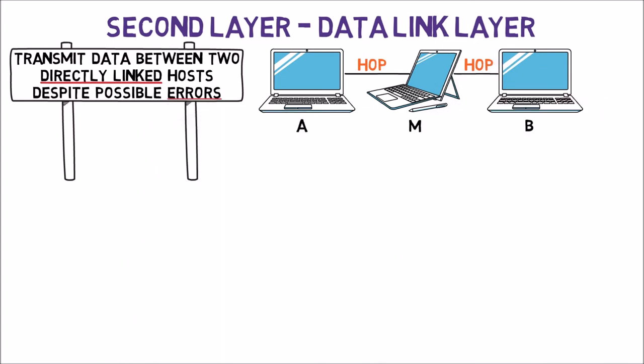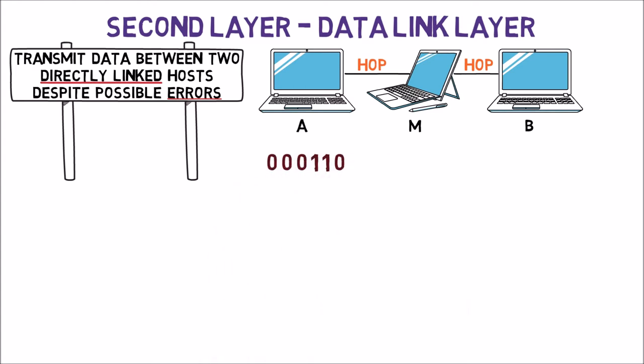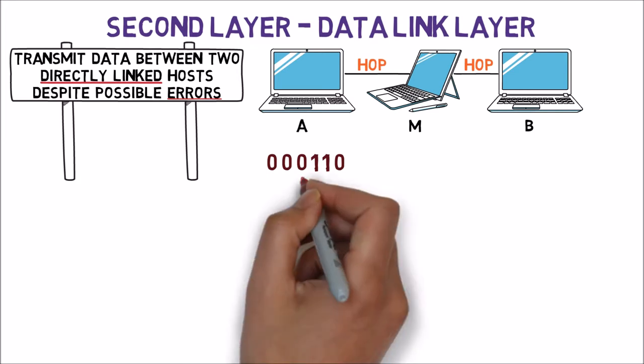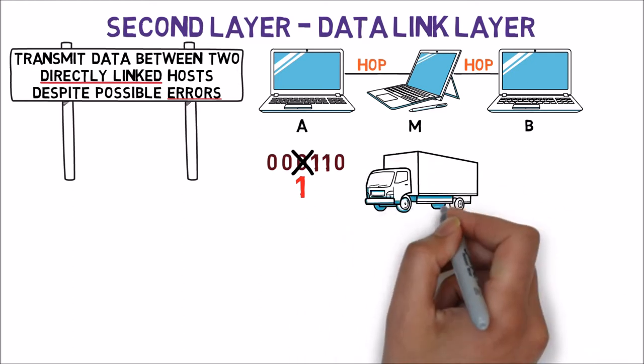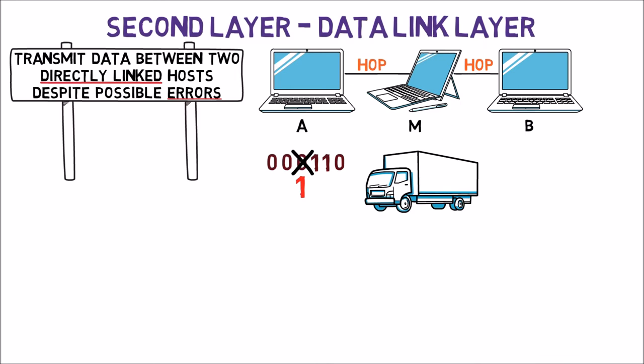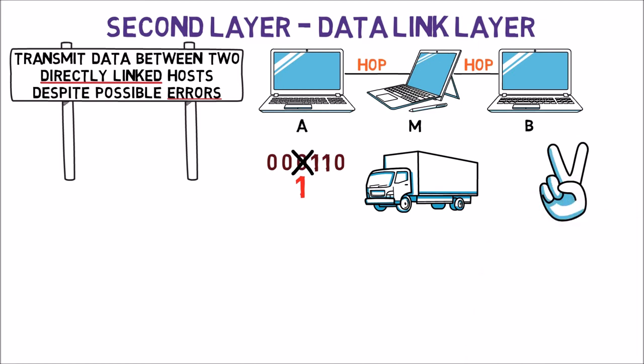What do we mean by errors? The physical layer might provide erroneous data. For example, one instead of zero. So, a stream of bits such as 0 0 0 1 1 0 might be received as 0 0 1 1 1 0. Many reasons might cause this kind of errors. For instance, we can think of a truck literally running over the wire where the bits are transmitted, causing some problem. Anyway, the second layer must handle the communication despite these errors.